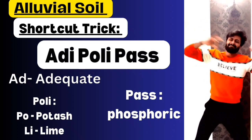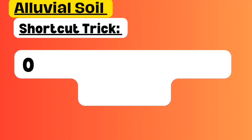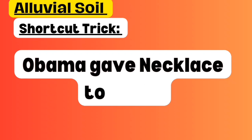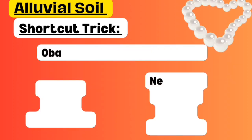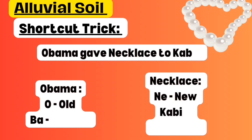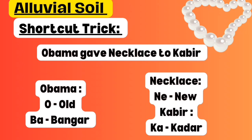Next shortcut: 'OBAMA GAVE NECKLACE TO KABIR.' Take OBAMA: O refers to old, BAMA refers to Bangar - so old alluvial soil is Bangar. Take NECKLACE: NE represents new, KA represents Khadar - new soil is Khadar. According to age, alluvial soil is categorized into two types: old and new. Old alluvial soil is Bangar, and new alluvial soil is Khadar.